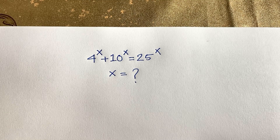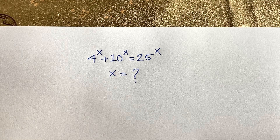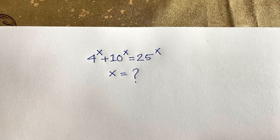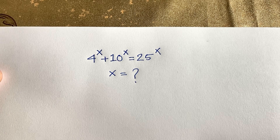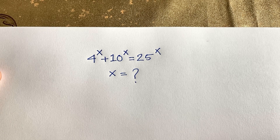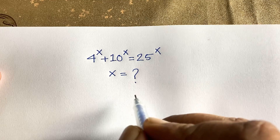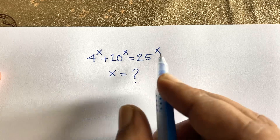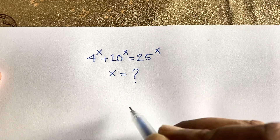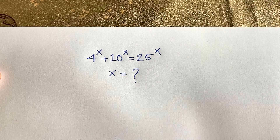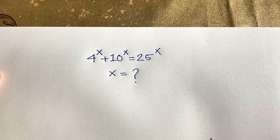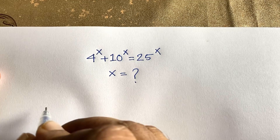Hello everyone. In this video we have solved an interesting exponential equation. It is a math olympiad question: 4 to the power x plus 10 to the power x is equal to 25 to the power x. What is x? How do we solve this question?